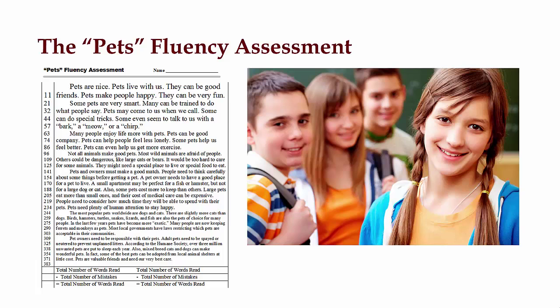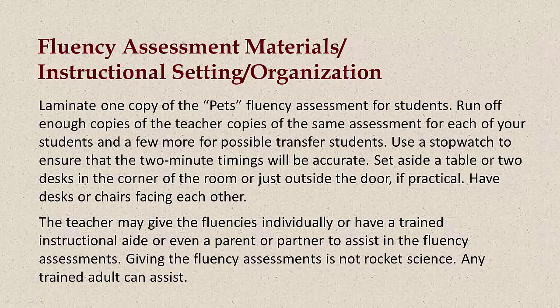Automaticity refers to the ability of the reader to read effortlessly, without stumbling or sounding out words. To prepare for the PETS Fluency Assessment, laminate one copy of the PETS Fluency Assessment for students. Run off enough teacher copies of the same assessment for each of your students and a few more for possible transfer students. Use a stopwatch to ensure that the two-minute timings will be accurate. Set aside a table or two desks in the corner of the room or just outside the door if practical. Have desks or chairs facing each other. The teacher may give the fluencies individually or have a trained instructional aide or even a parent or partner to assist in the fluency assessments.